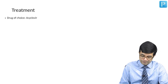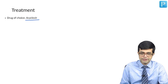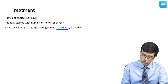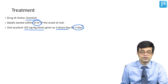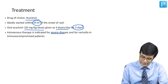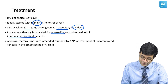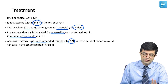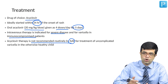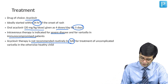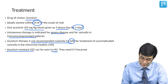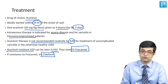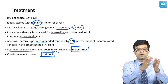Treatment of chickenpox: the drug of choice is acyclovir, though it is not needed in most patients. The dose is 20 mg/kg/dose orally, four times a day for five days, ideally started within 24 hours of onset of rash. IV therapy is indicated for severe disease and for varicella in immunocompromised patients. Acyclovir is not recommended routinely by the American Academy of Pediatrics for otherwise healthy children — it is used only in children over 12 years, pregnant females, or immunosuppressed individuals. For acyclovir-resistant VZV in HIV-positive individuals, IV Foscarnet is used; if that fails, IV Cidofovir is next.